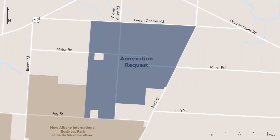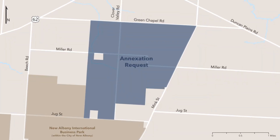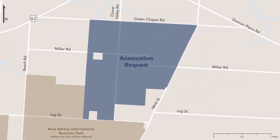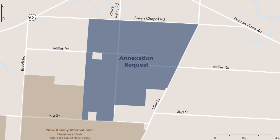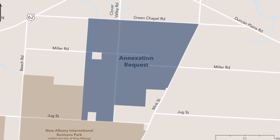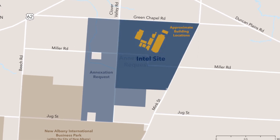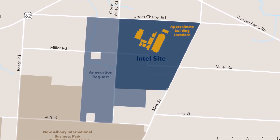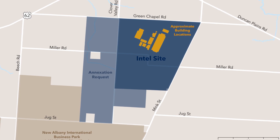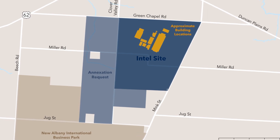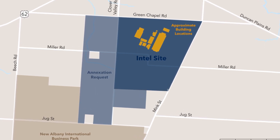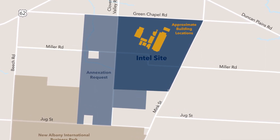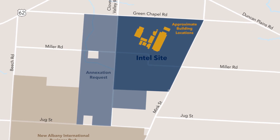The property owner is requesting to rezone 1,689 acres to the city's TMD classification. This includes the Intel site, which consists of less than 1,000 acres. The remaining acres, zoned TMD, can be developed with commercial uses.